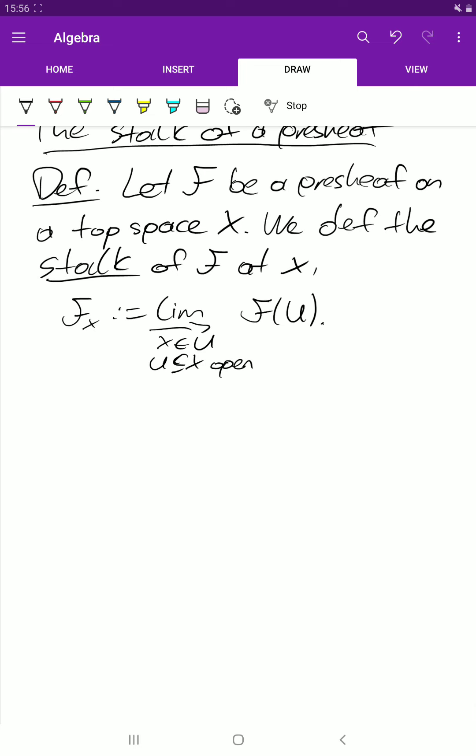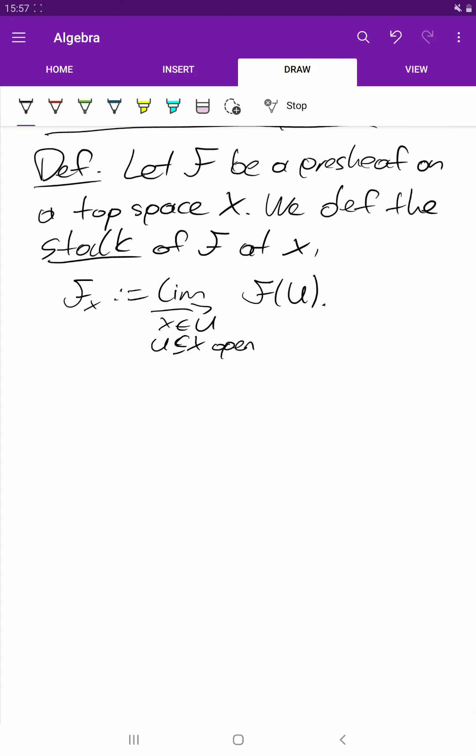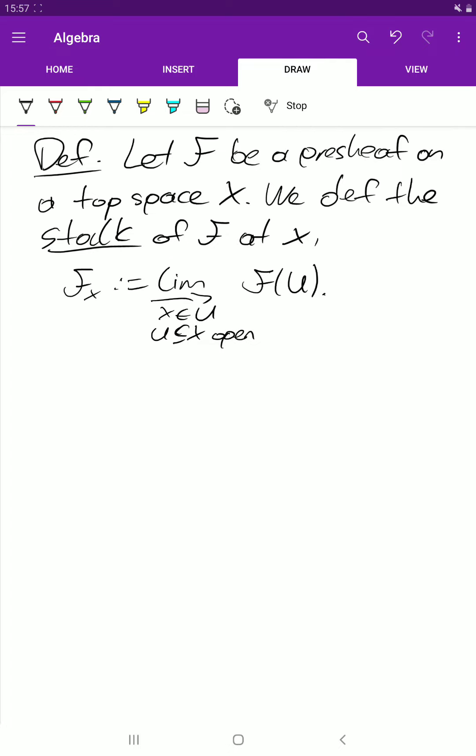But let's stick with abelian groups for now. So we have that definition. If you don't know what the colimit is, let me give you a more explicit way to express it.